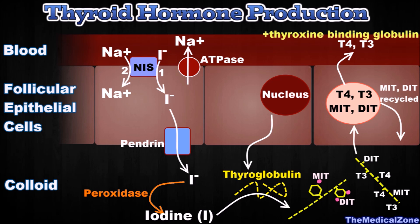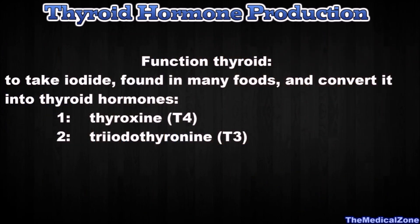About 93% of the thyroid hormone released from the thyroid gland is normally T4 and only 7% is T3. However, in the peripheral tissues, T4 will be converted into T3 for a great part. Simply said, the function of the thyroid gland is to take iodide found in many foods and convert it into thyroid hormones, thyroxine and triiodothyronine.